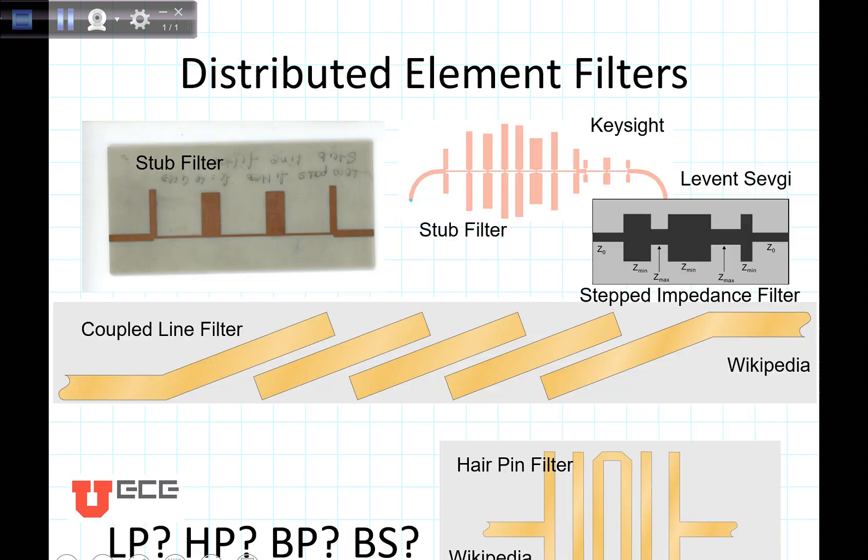But what we're interested in today are actually distributed elements. Distributed elements have a length to them. They're not finite in length. So for example, in the coupled line filters that we'll be doing, these lengths right here are lambda by eight. So they have a specific length, and that's why we're saying they distribute the element across the whole stub.